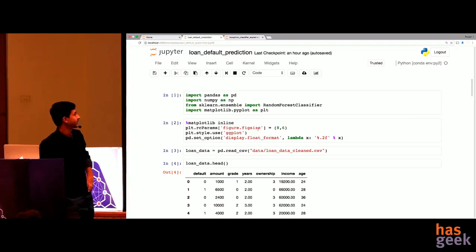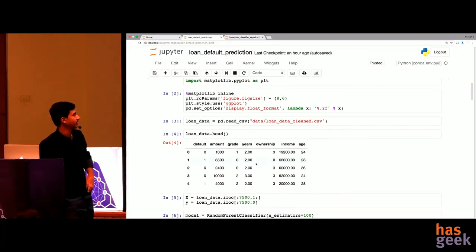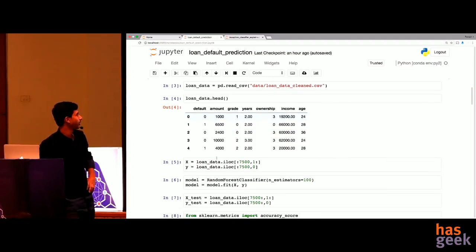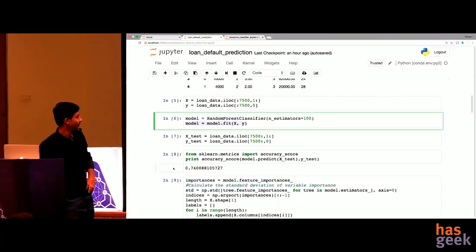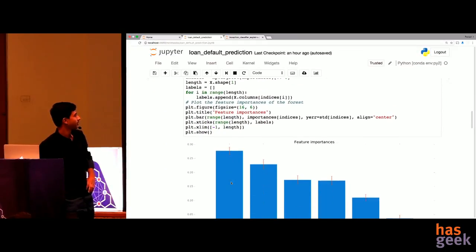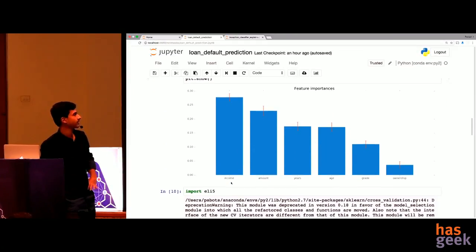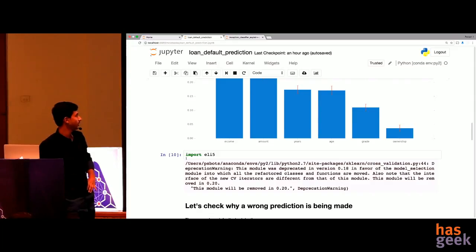Now let's see the same dataset we faced earlier, the loan default prediction dataset. This is a normal scikit-learn pipeline where you're training a model here, a random forest classifier. You're fitting the model. Model dot fit. You see that the accuracy is 74 percent. Good enough. You calculate the feature importances earlier that we did.